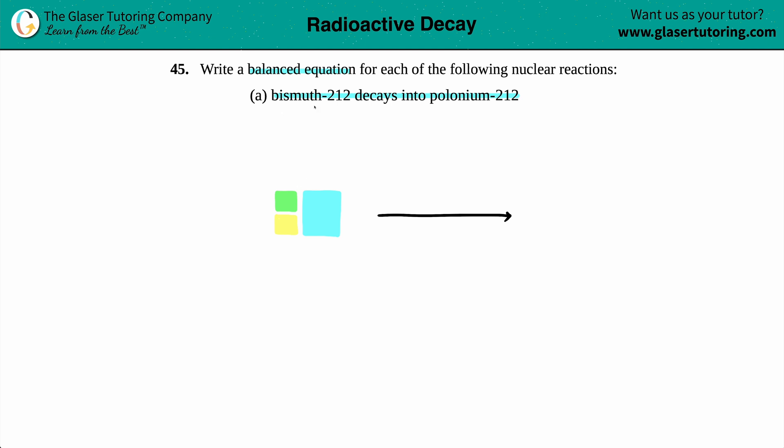Let's start off with writing all of our information for bismuth. Bismuth is Bi, so we're going to put that there. And the 212 that they tell us is always going to be the mass number. They have to tell us the mass number because it can change for every atom. Mass numbers, which are the higher numbers of the two numbers in these boxes, always go on the top.